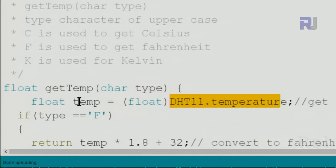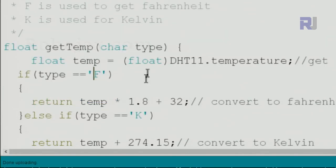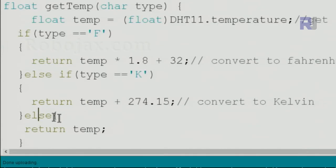Here we get a temperature, it's stored here as Celsius, and we check if type is F. This is character type. Then what we do is we get the temperature that has been calculated, we multiply it by 1.8 plus 32, which will convert it to Fahrenheit and return it back. If the type is K for Kelvin, then we have to add 273.15 on top of Celsius. Else return the original value which is Celsius.